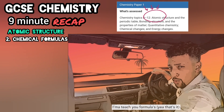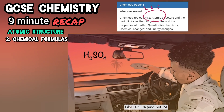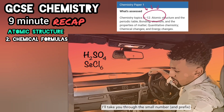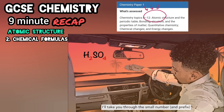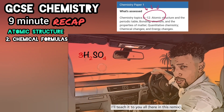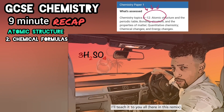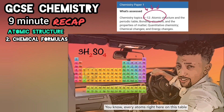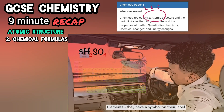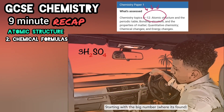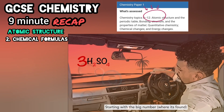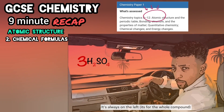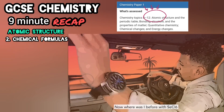I'mma take you through the formulas, yeah that's it. Like H₂SO₄ and NaCl₆. I'll take you through the small number and prefix, I'll teach it to you all here in this remix. You know every atom right here on this table — elements they have a symbol on their label. Starting with the big number where it's found, it's always on the letters for the whole compound.